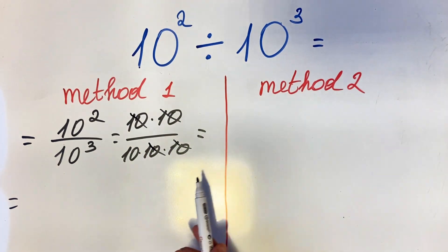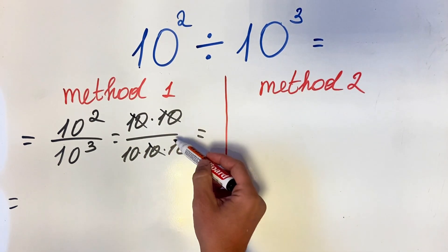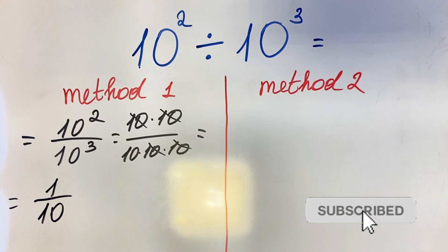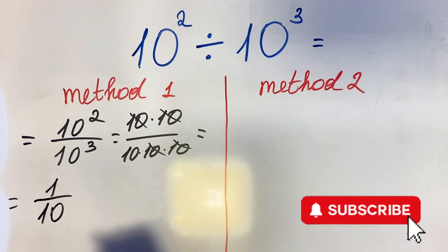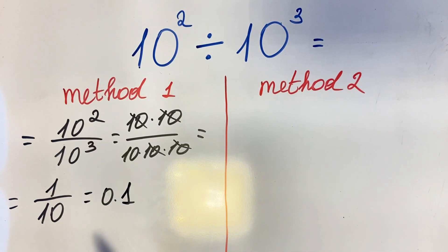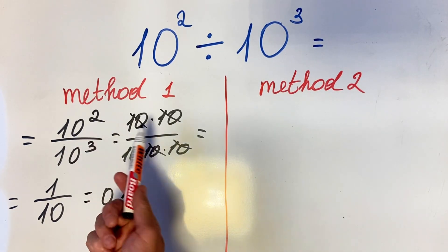one over 10, or 0.1. So this is the first method where you use the fraction approach.